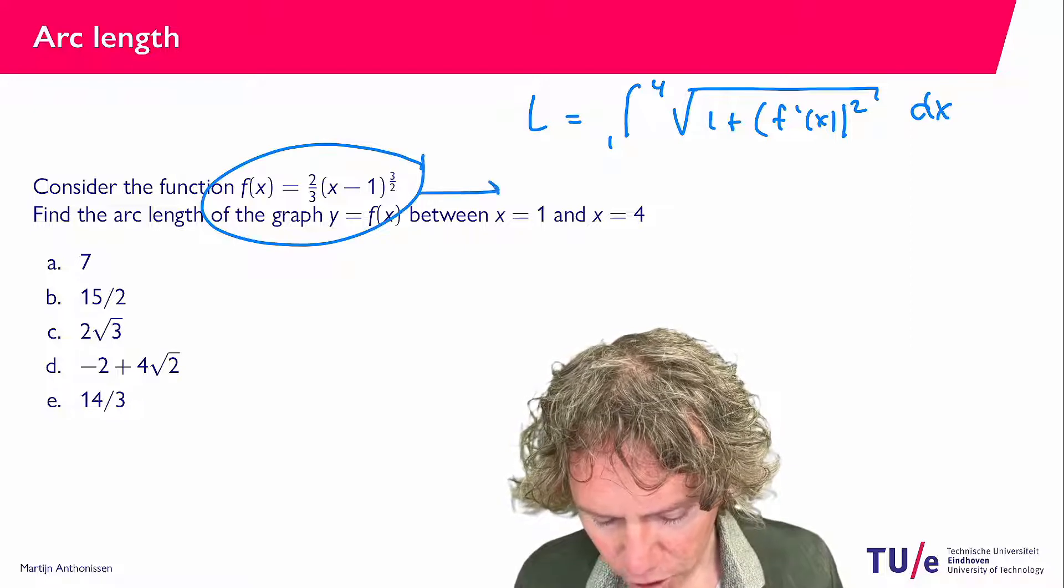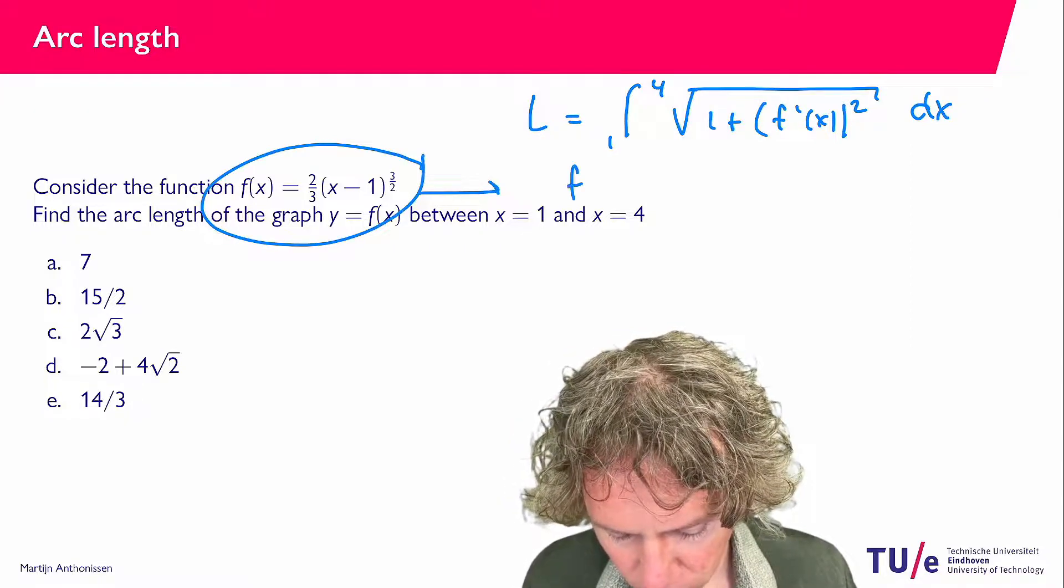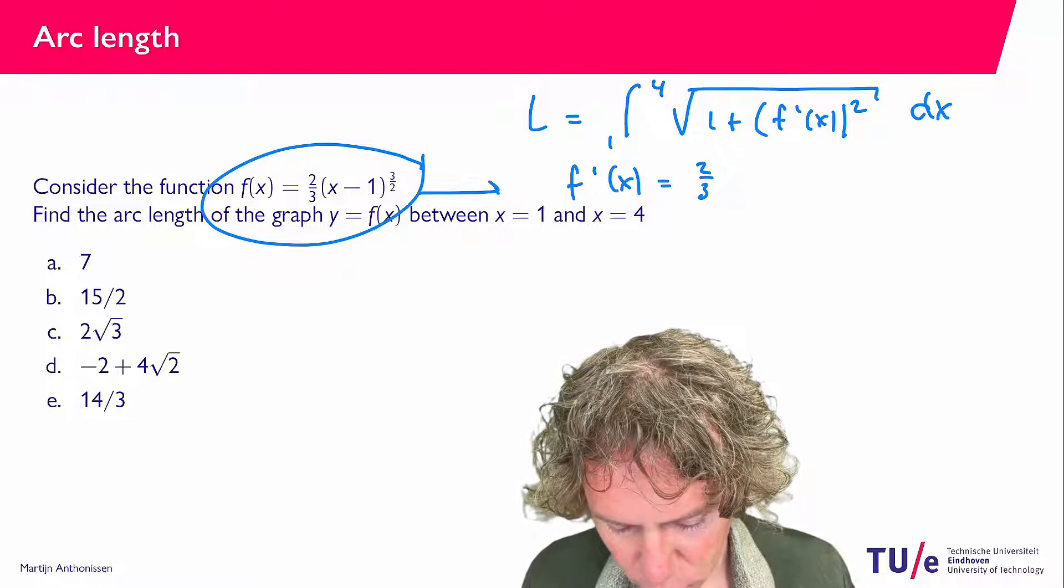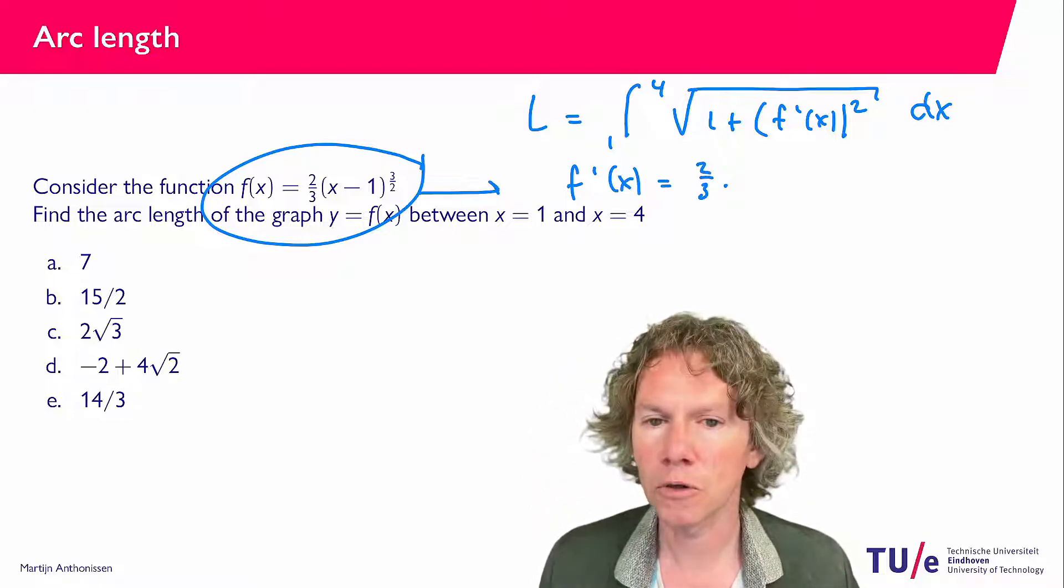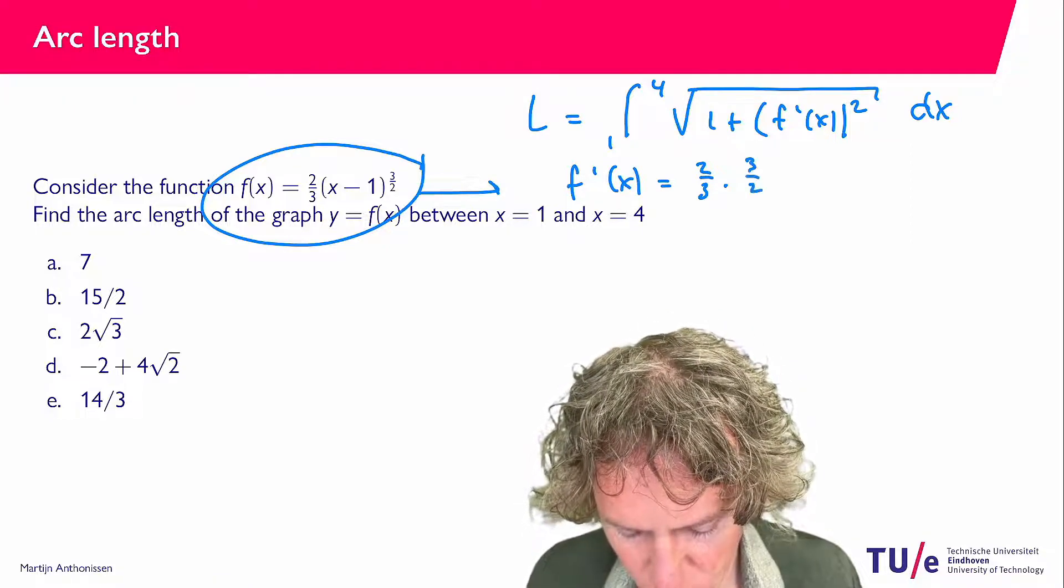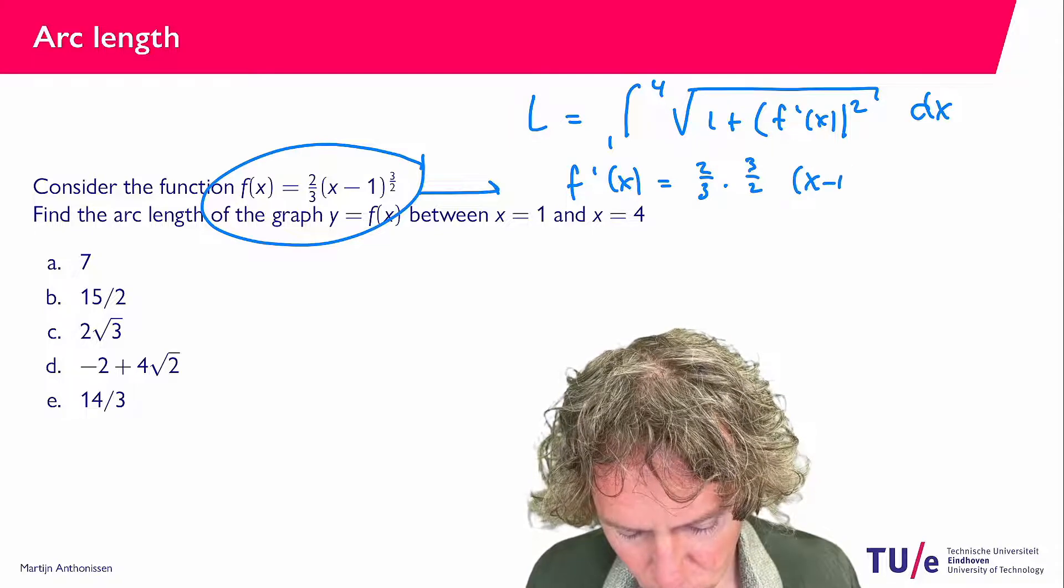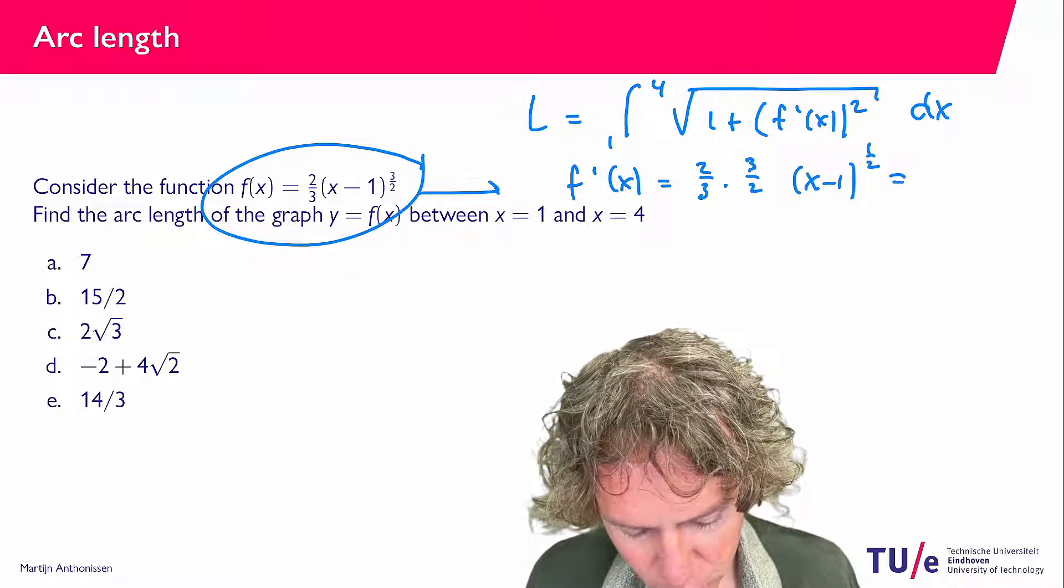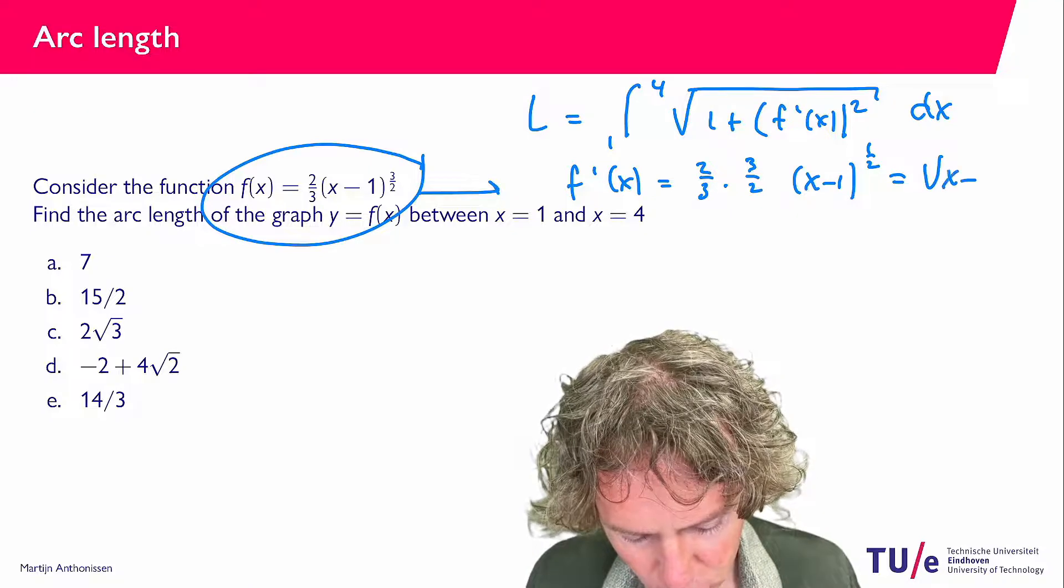Because indeed for the function that we have here, if we differentiate it we find that f prime x is two-thirds times the derivative of x minus 1 to the power 3 over 2, so we get a 3 over 2 and then x minus 1, and we lower the exponent by 1 and we get one-half. So this becomes the square root of x minus 1.